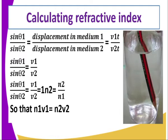Now, since time is constant, we consider the velocity which changes. And this gives us: the sine of the angle of incidence in medium 1 divided by the sine of the angle of refraction in medium 2 is equivalent to the velocity of light in medium 1 divided by the velocity of light in medium 2.